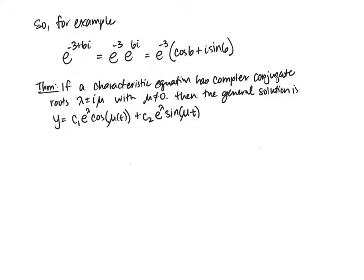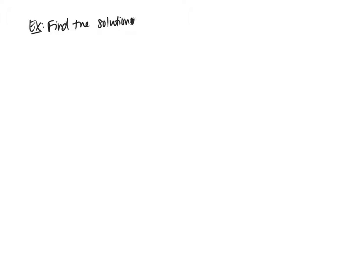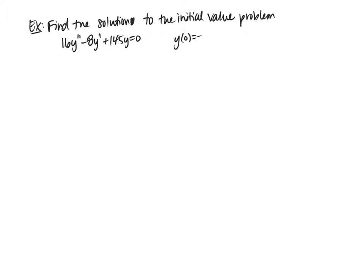Just to correct the notation: the general solution is y equals c1 e to the lambda t cosine of mu t, plus c2 e to the lambda t sine of mu t. That is our general solution.